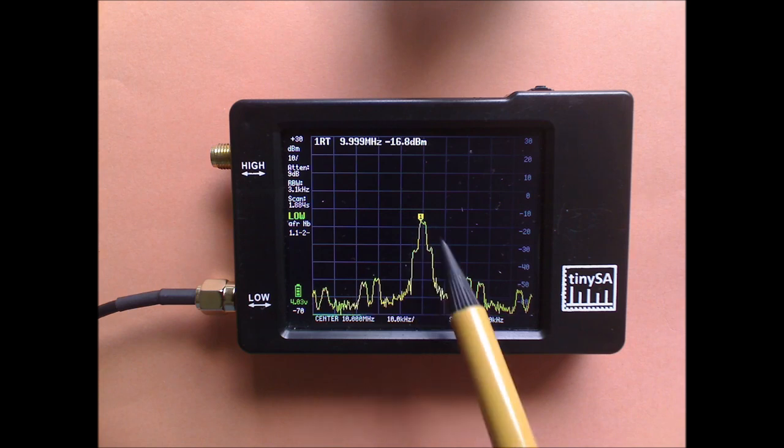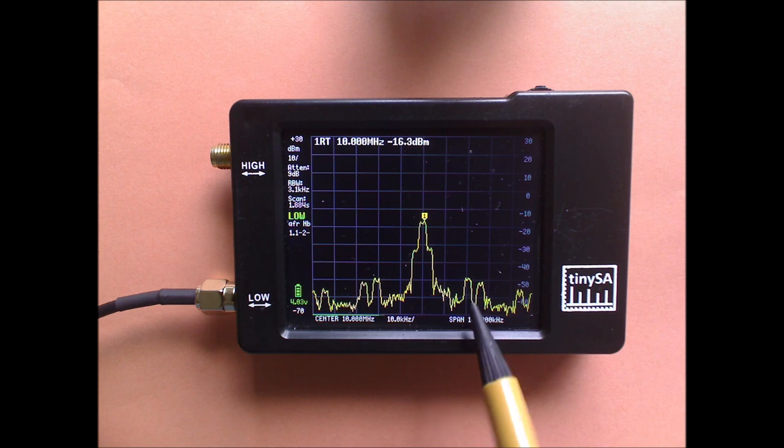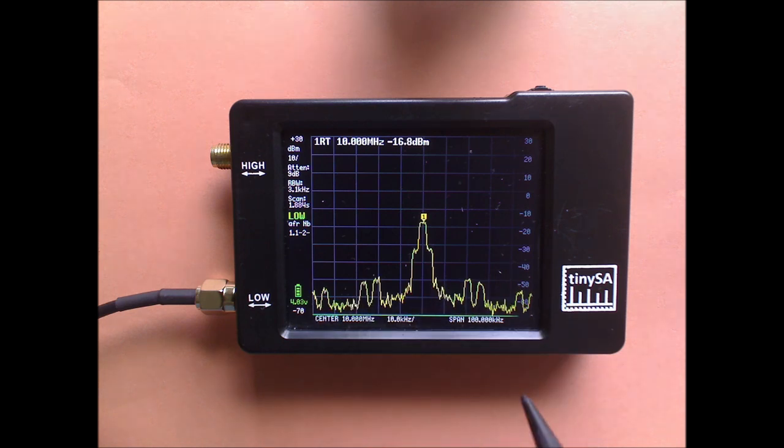You see here the center of the modulation, the carrier and the two sidebands. And far out you have some higher harmonics of the modulated signal.